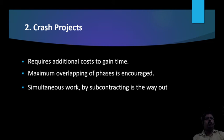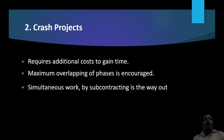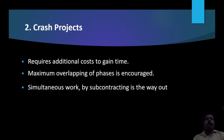A cash project requires additional cost to gain time — it is cost-limited and dependent on the cost factor. Maximum overlapping of phases is encouraged, with more tasks, double shifts, and similar measures so that the project is completed in less time to reduce cost. Simultaneous work by subcontracting or outsourcing is a way out. For example, in software projects, some part of the development may be outsourced to start-up companies. These are cash projects.